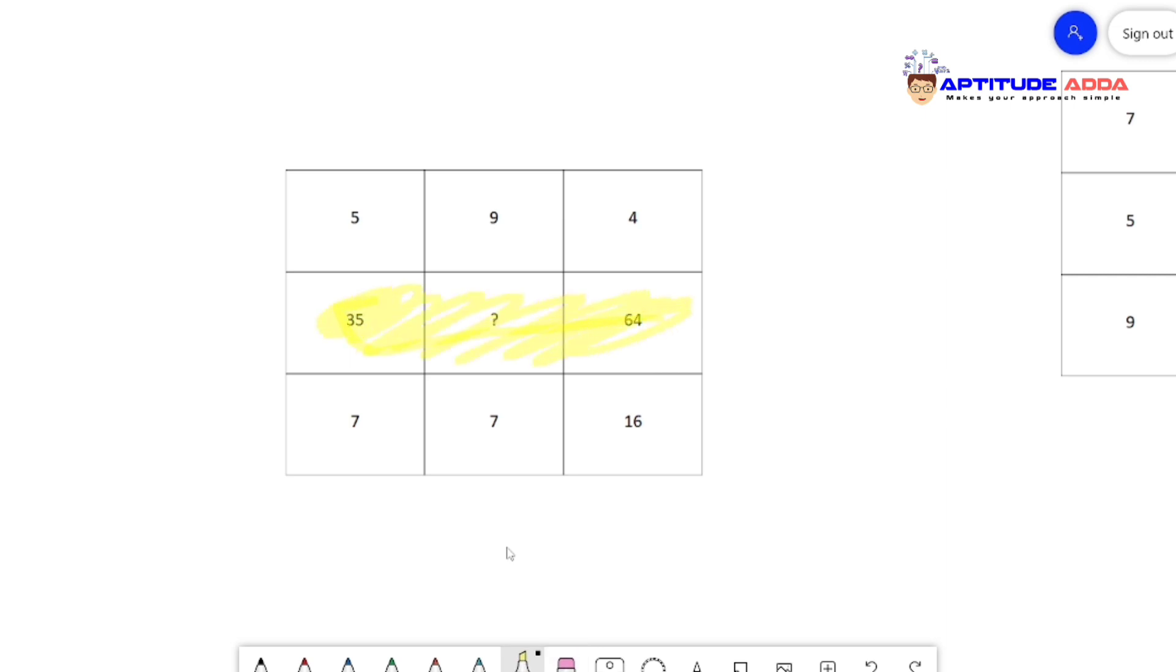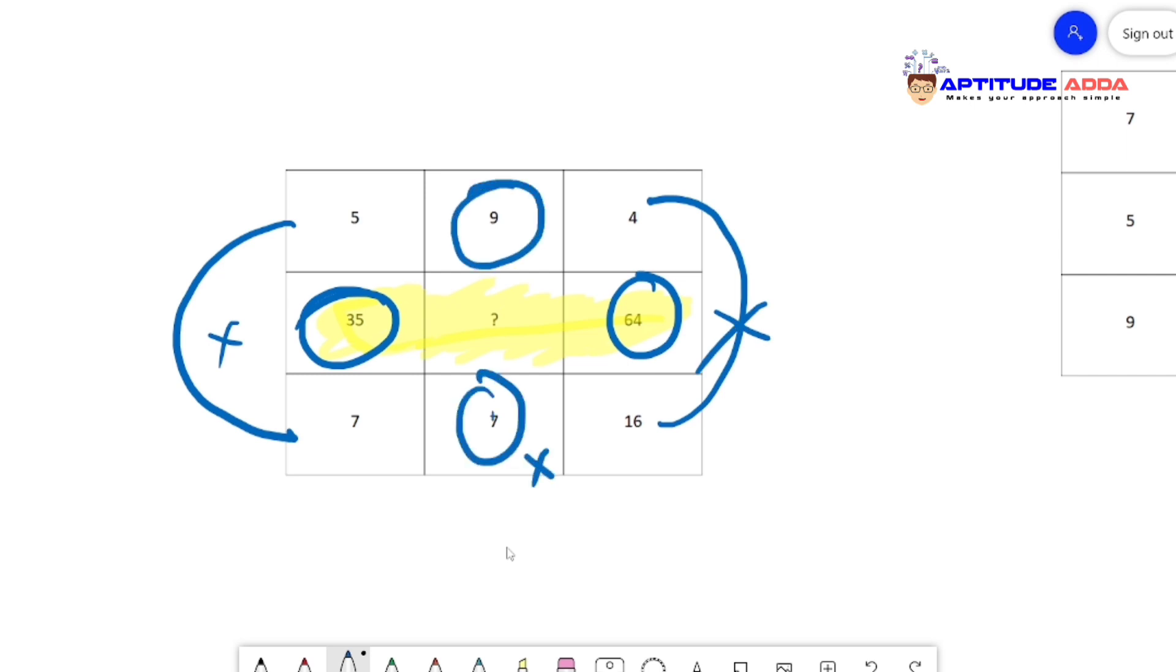The middle row will be the resultant. How can we get 35 from first row and last row? 5 and 7 - seven 5s are 35. So just multiply first row and last row, it gives you the middle row. Let me check with the last column: 4 into 16 is 64, right? So it works. 9 into 7 - that will be the answer. Nine 7s are 63, and 63 is the answer.